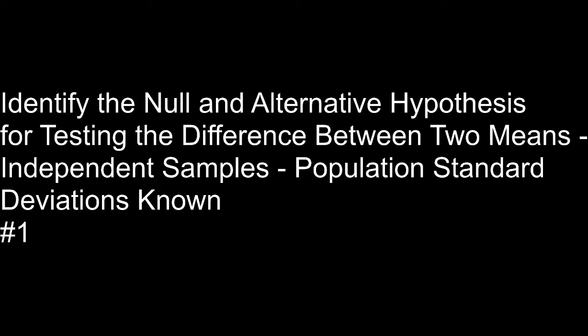This video covers the objective of identifying the null and alternative hypothesis for testing the difference between two means. This is with independent samples from two independent populations, and this is also a case where the population standard deviations are known. This is a little different than the case when the population standard deviations are unknown.